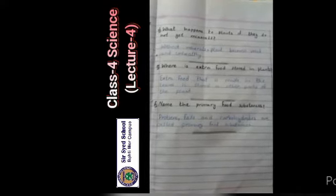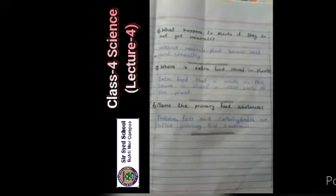F. Name the primary food substances. Proteins, fats and carbohydrates are called primary food substances.